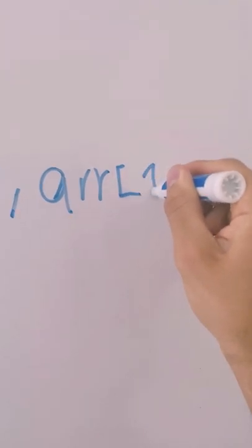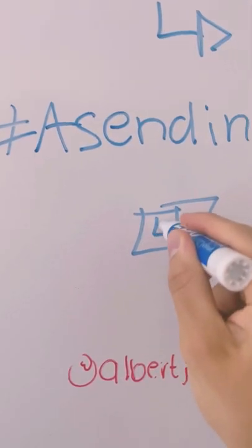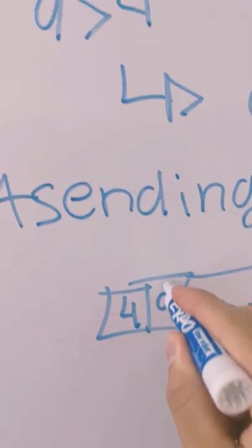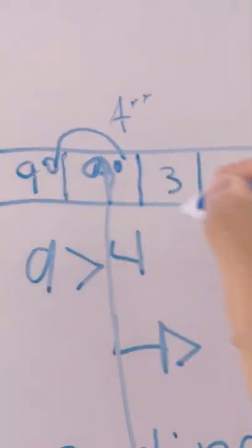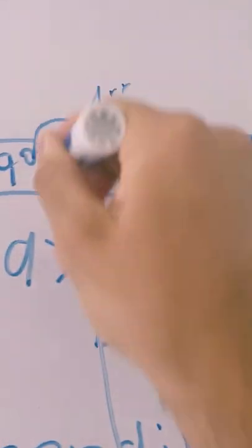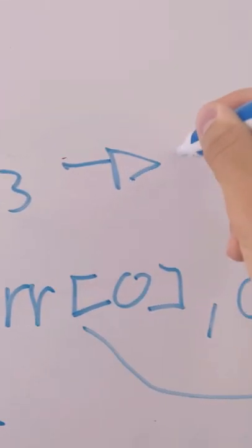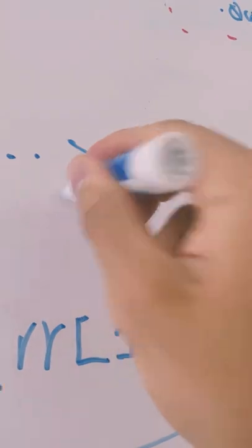We're going to do this process of swapping and checking for each of the elements against each of the other elements. In this case, we started with 9, and we're going to compare it until we reach the end of the array: 9 with 4, 9 with 3, and so on. And then, if 9 is greater, we're going to swap it till the end.